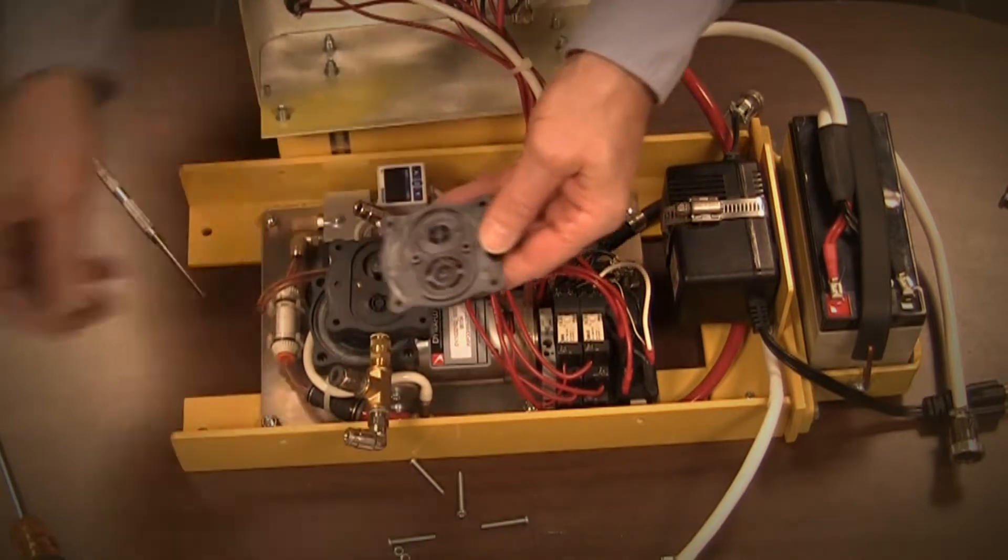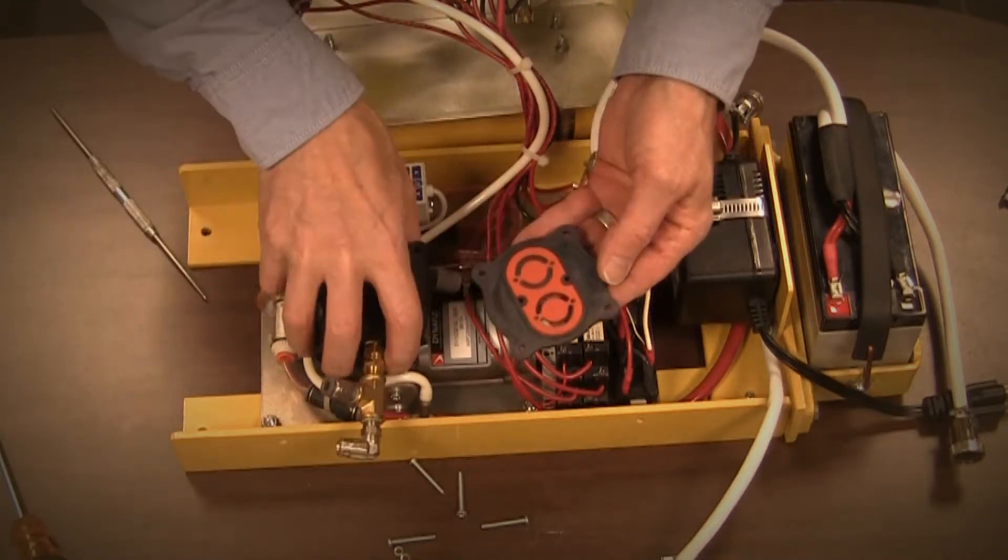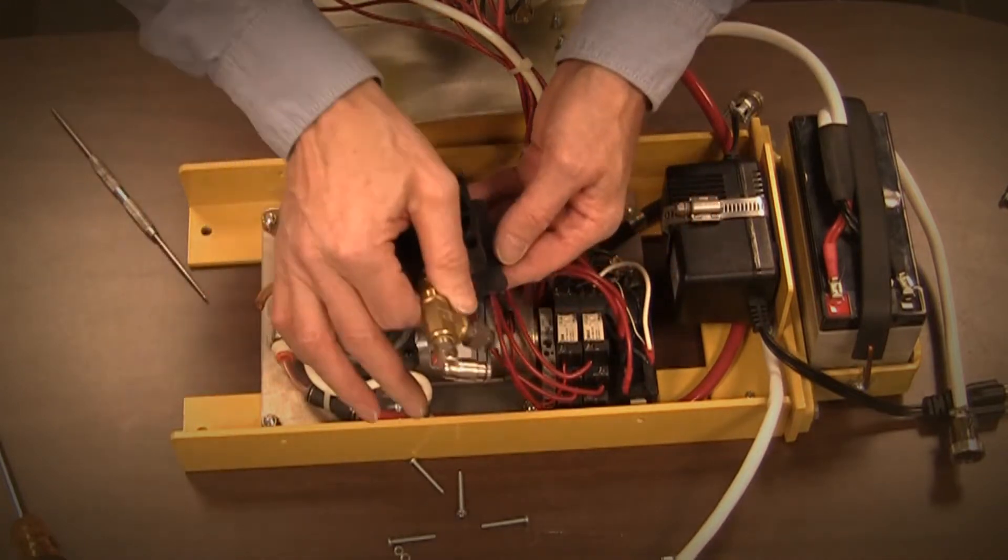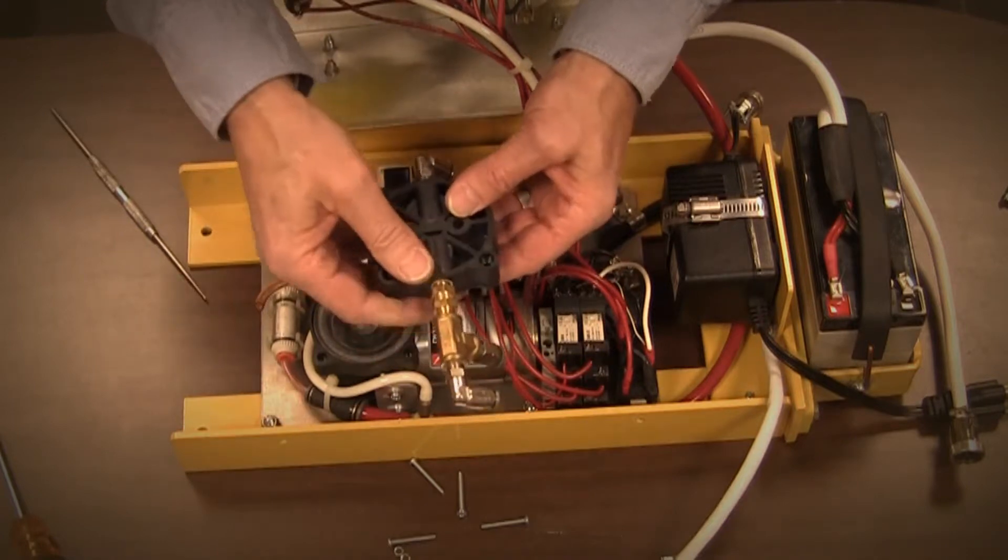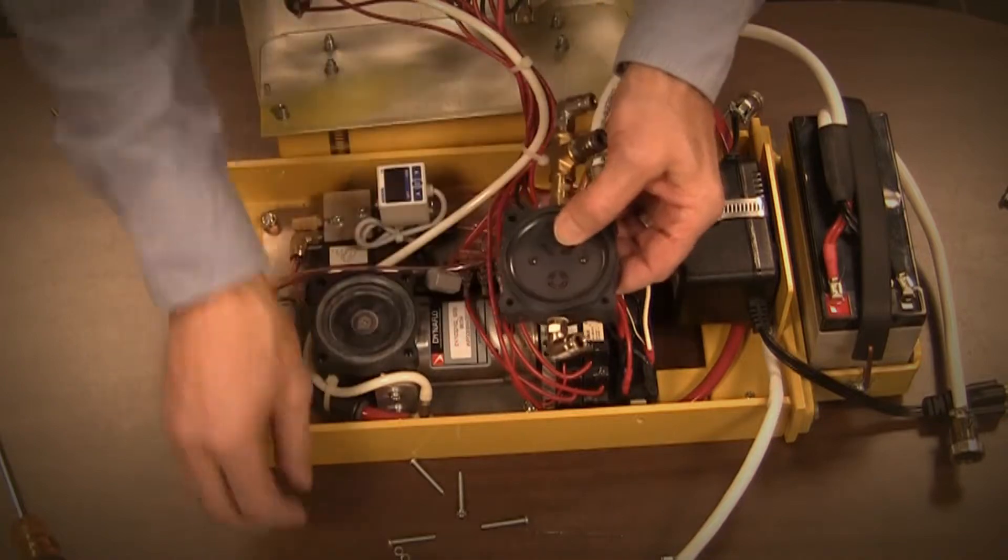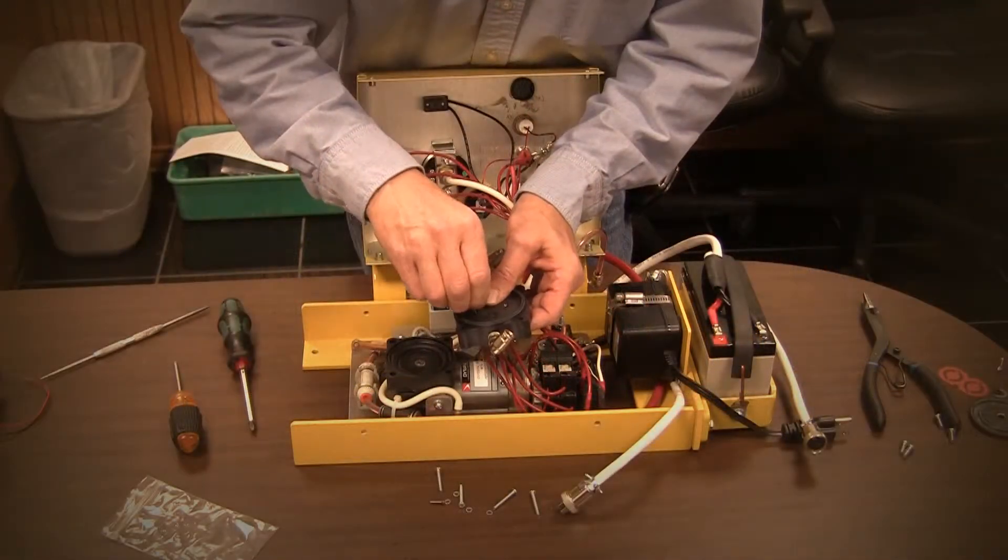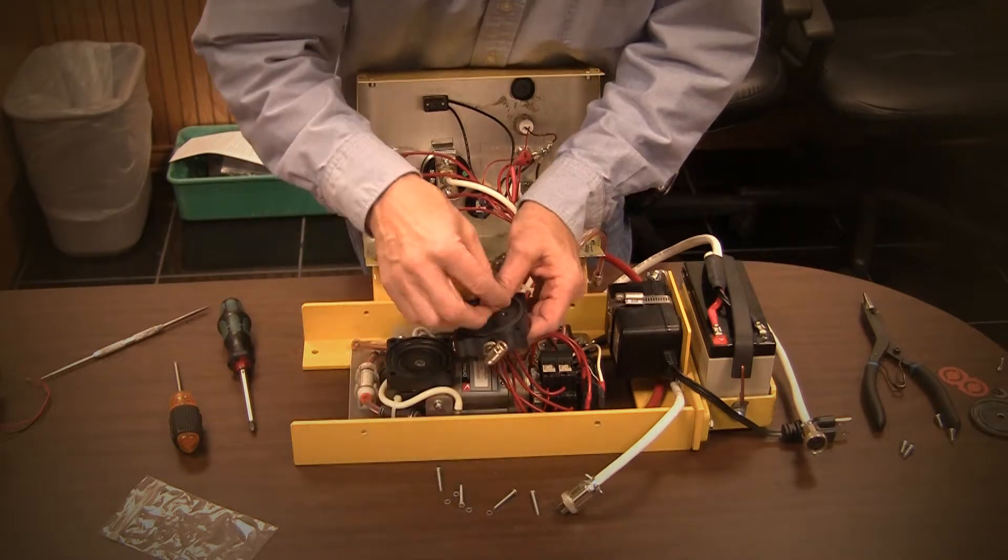Hold the valve plate with the recess facing up and place the new flap valve gasket in the recess. Place the pump head on the valve plate using the alignment pin to assemble them correctly. As you hold the head assembly together, turn it over and secure the valve plate with the original two screws.